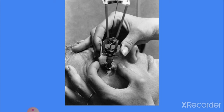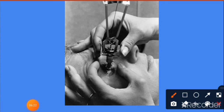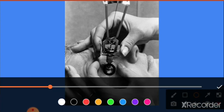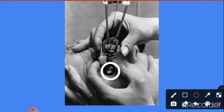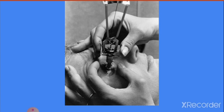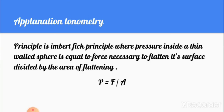Here is the procedure for measuring IOP using indentation tonometry with the Schiotz tonometer. You can see the footplate being placed on the eye. The needle moves and how much it moves indicates the IOP.